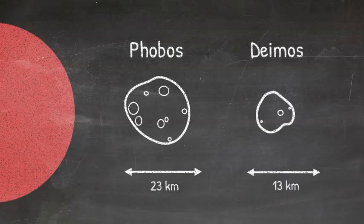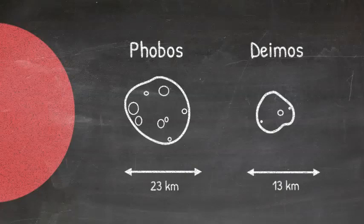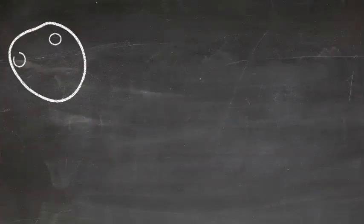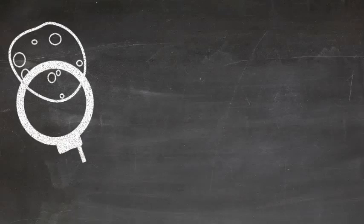The two moons were discovered in 1877, but their origin remains unknown. Observations of the moons suggest the pair resemble asteroids.